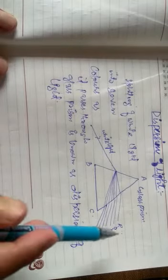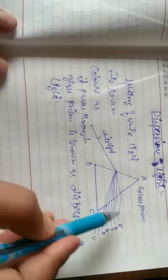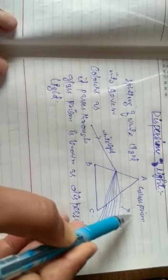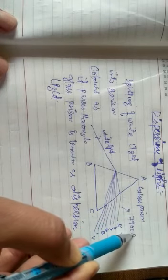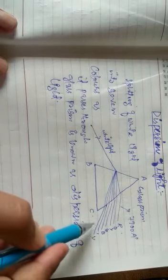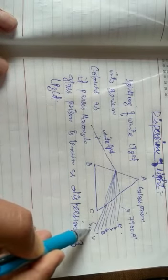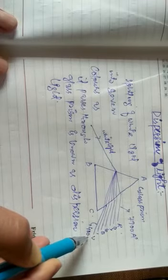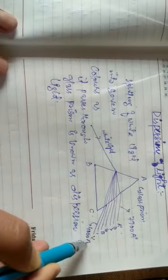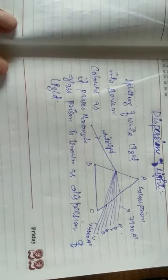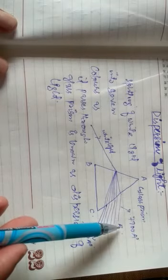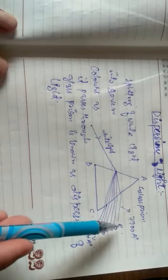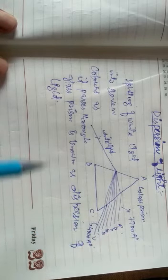Among those colors, red has the maximum wavelength, of the order of 7900 angstroms, and violet has the least wavelength, of the order of 4000 angstroms. So this range varies from four thousand to nearly eight thousand angstroms. Among them, violet has the least wavelength and red has the maximum wavelength. Vice versa for frequency: red has the least frequency and violet has the maximum frequency.